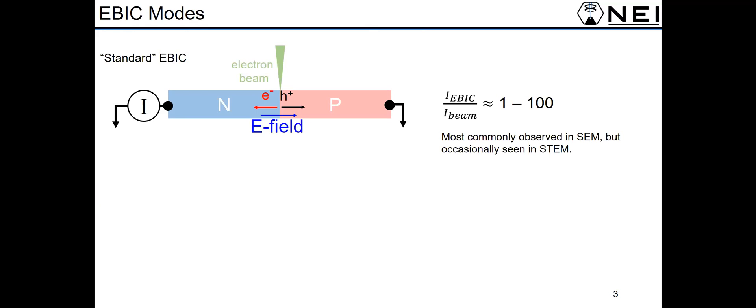So if you have a 1 nanoamp beam current, your standard EBIC signal is going to be something like a nanoamp up to hundreds of nanoamps. This is most commonly observed in the SEM and it's occasionally seen in STEM over the years, but this is most of the EBIC that's done in the world.